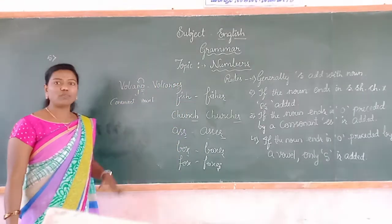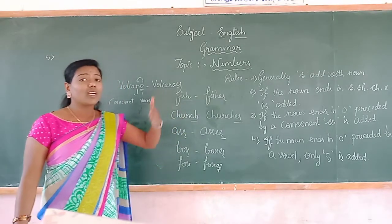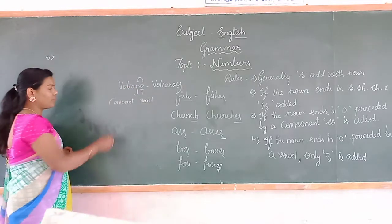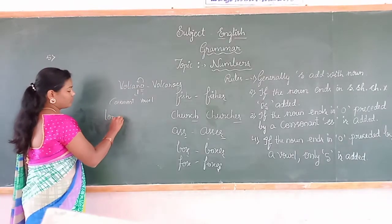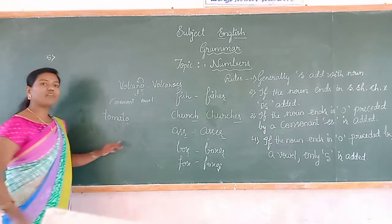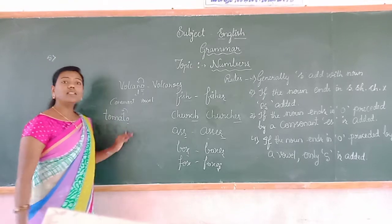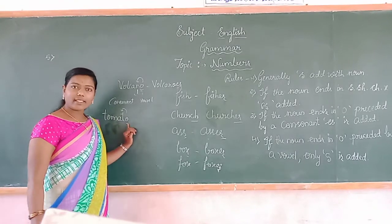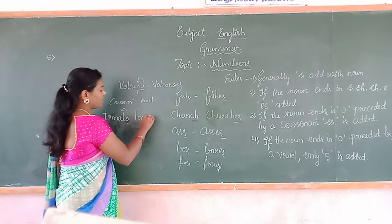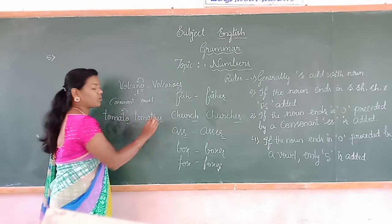Another example: tomato. This word ends with O. The letter before O is T, which is a consonant. So we add ES. Clear? Yes. Next word.